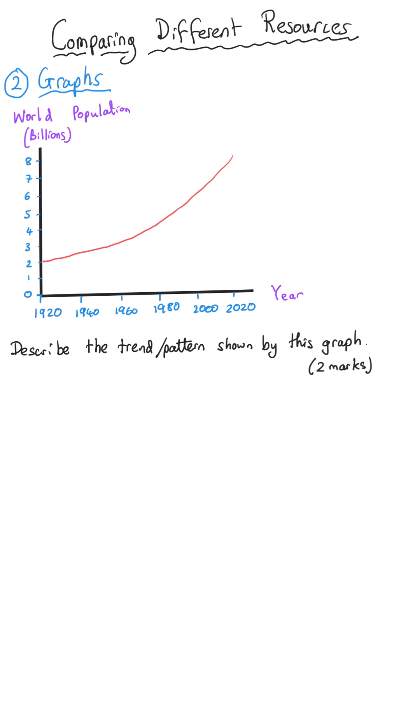And so the trend wants the general pattern the relationship as time passes what happens to the world population. And so the first thing to note is this line is going upwards. So the population is increasing.